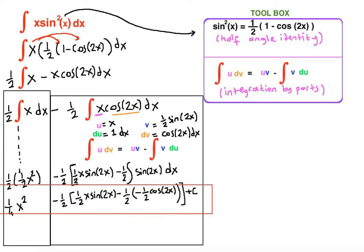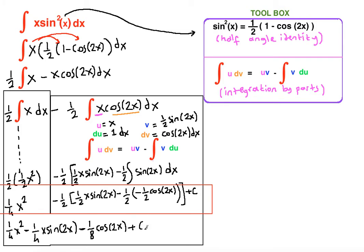Connecting the first and second integrals: we get ¼·x² minus one-half times one-half is one-fourth, times x·sin(2x), minus one-fourth times one-half is one-eighth. Negative times negative is positive, but positive times negative gives us negative one-eighth·cos(2x) plus C. This is the final answer.